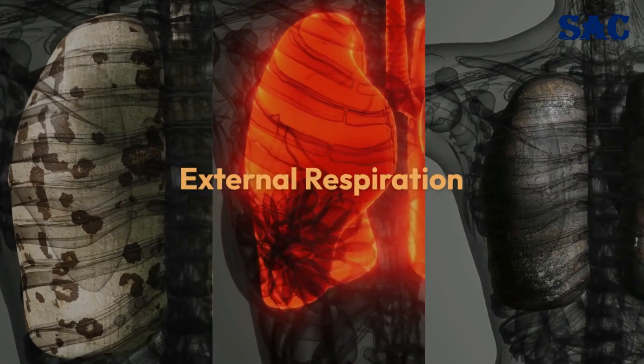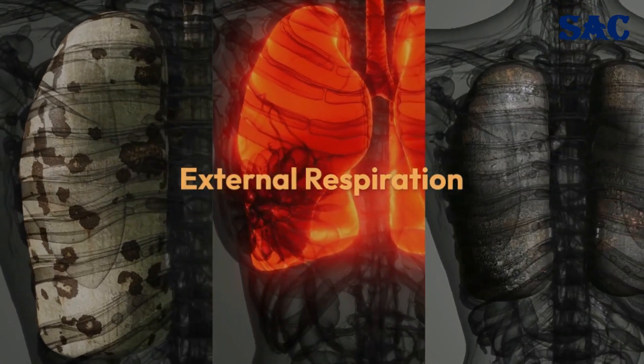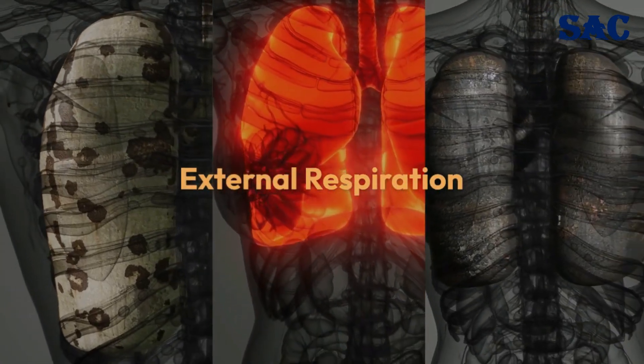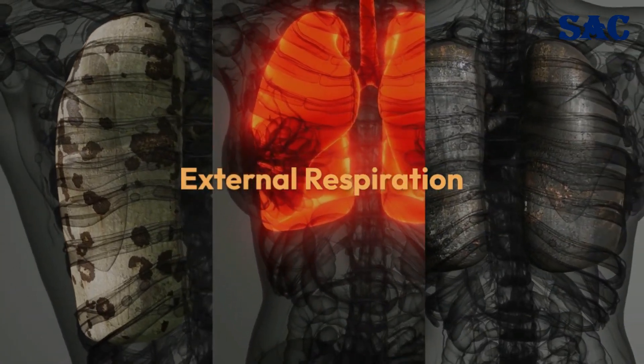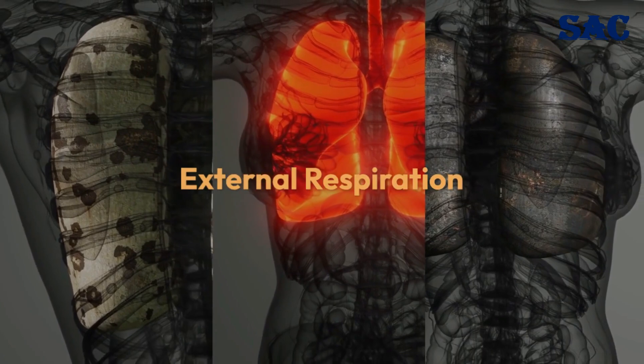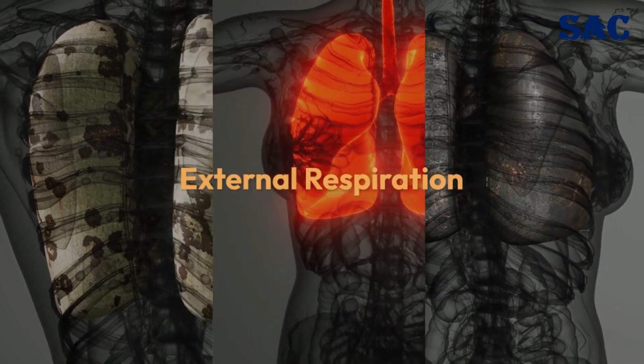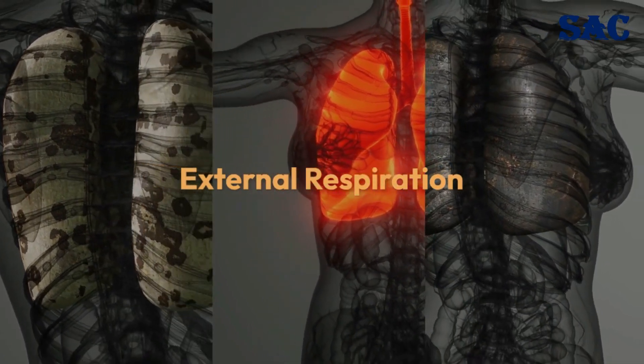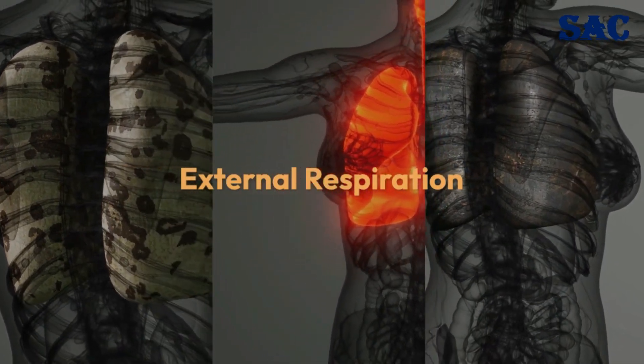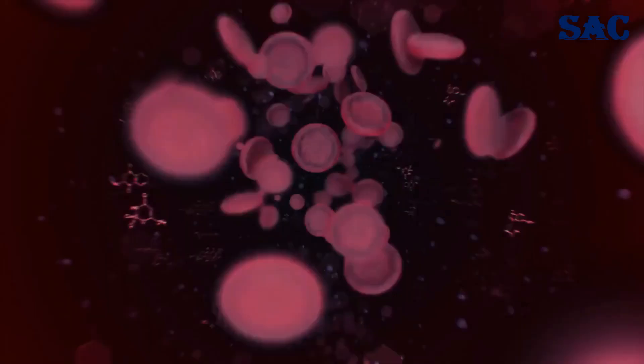External respiration happens in the lungs, where oxygen from inhaled air diffuses into the bloodstream and carbon dioxide diffuses out to be exhaled. The oxygenated blood then circulates to body cells.